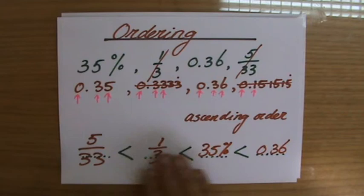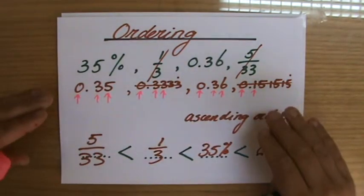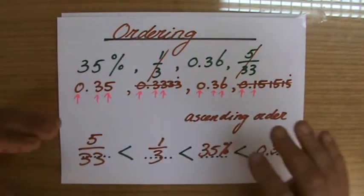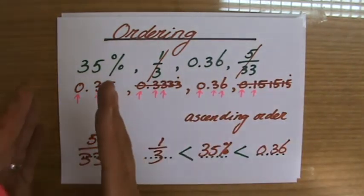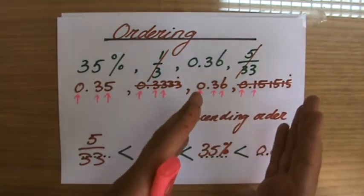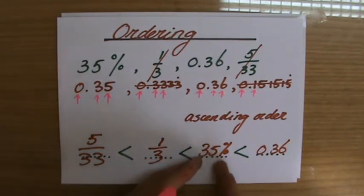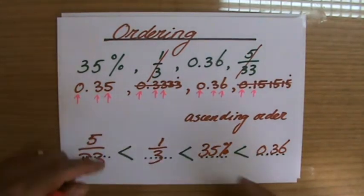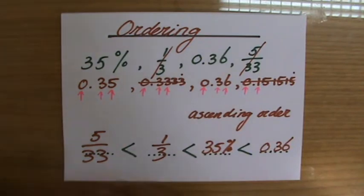So write them all as fractions, decimals, or percentages — whatever you like — to compare them easily. However, always write down the original number, the original value given to you in the question. I have another example for you, see you there!